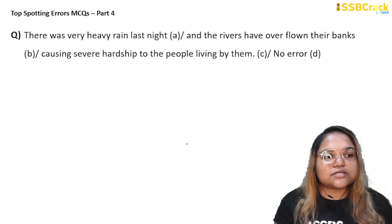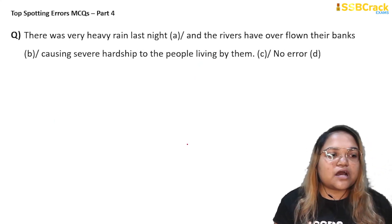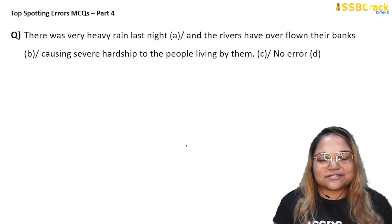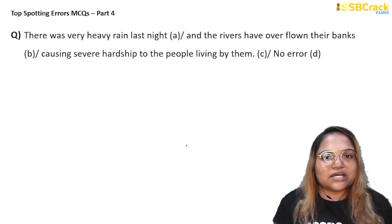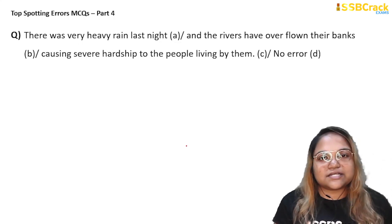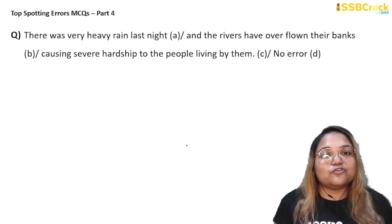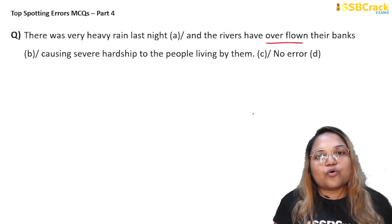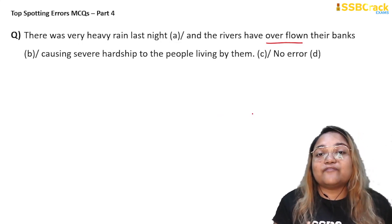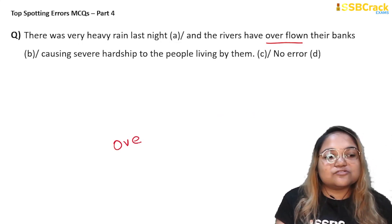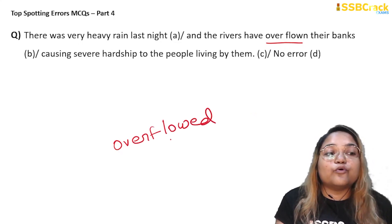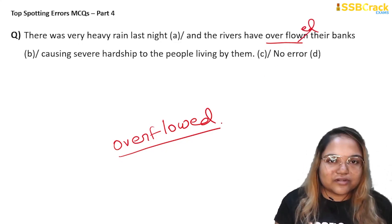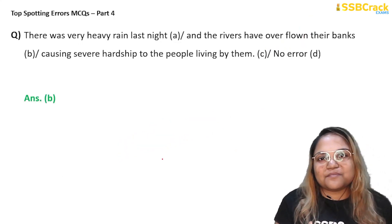Next question: 'There was very heavy rain last night and the rivers have overflown their banks causing severe hardship to the people living by them.' You might think 'overflown' is the past participle of 'overflow,' but you would be wrong. The correct past participle of 'overflow' is 'overflowed,' not 'overflown.' So the word 'overflown' is incorrect — it should be 'overflowed.' The error is in part B and the answer is option B.